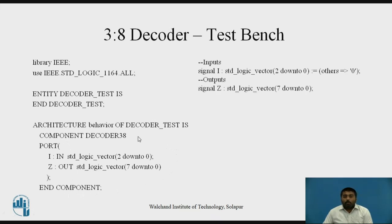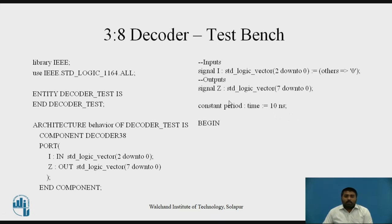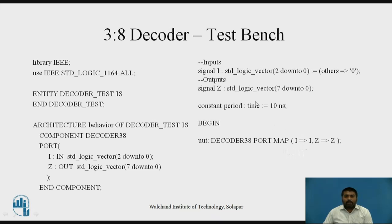After the component declaration, we declare signals for inputs and outputs. Input I is of vector type 2 down to 0, and output Z is of vector type 7 down to 0. We also write the constant 'period', which is optional. Then we begin the architecture. Component instantiation is done using a label, then the component name, then the 'port map' keyword, and in the brackets we map the signals: I is mapped with I and Z is mapped with Z.